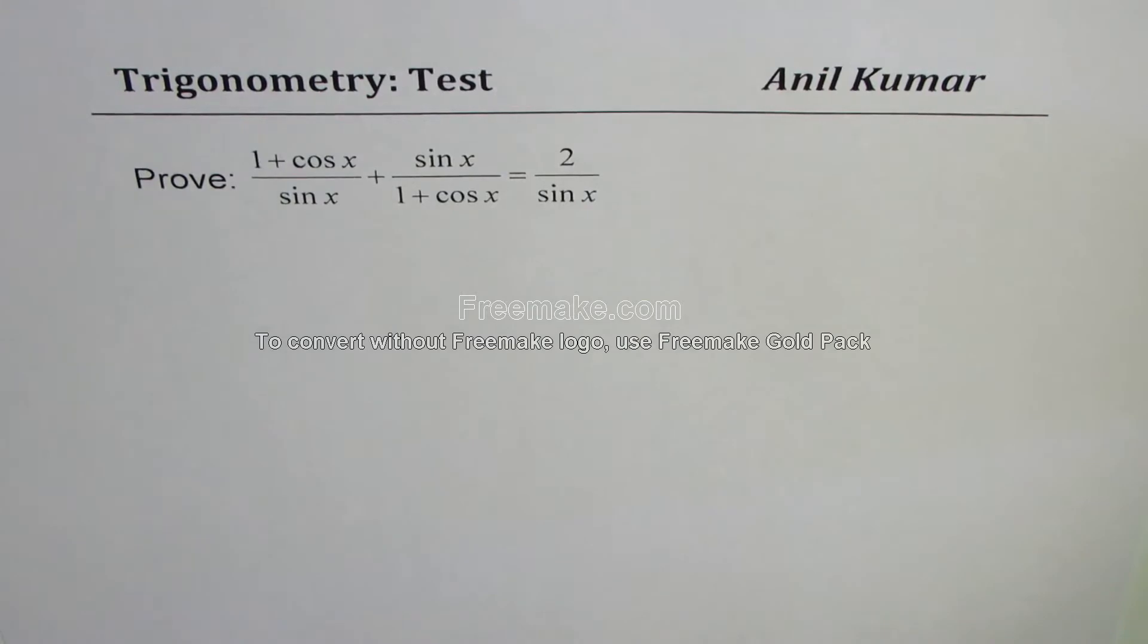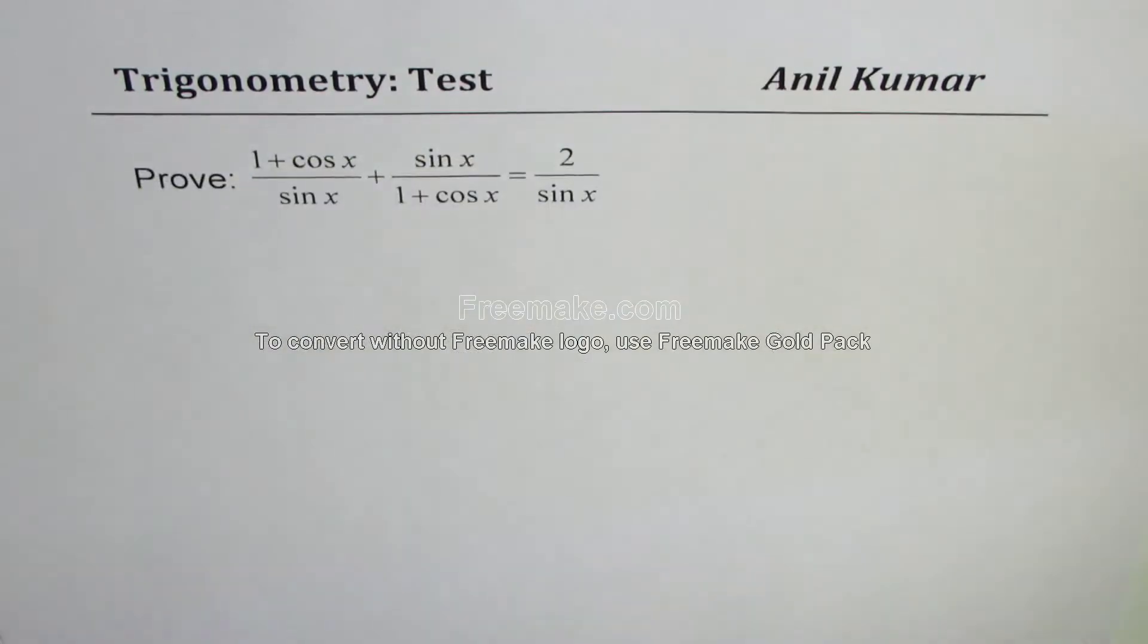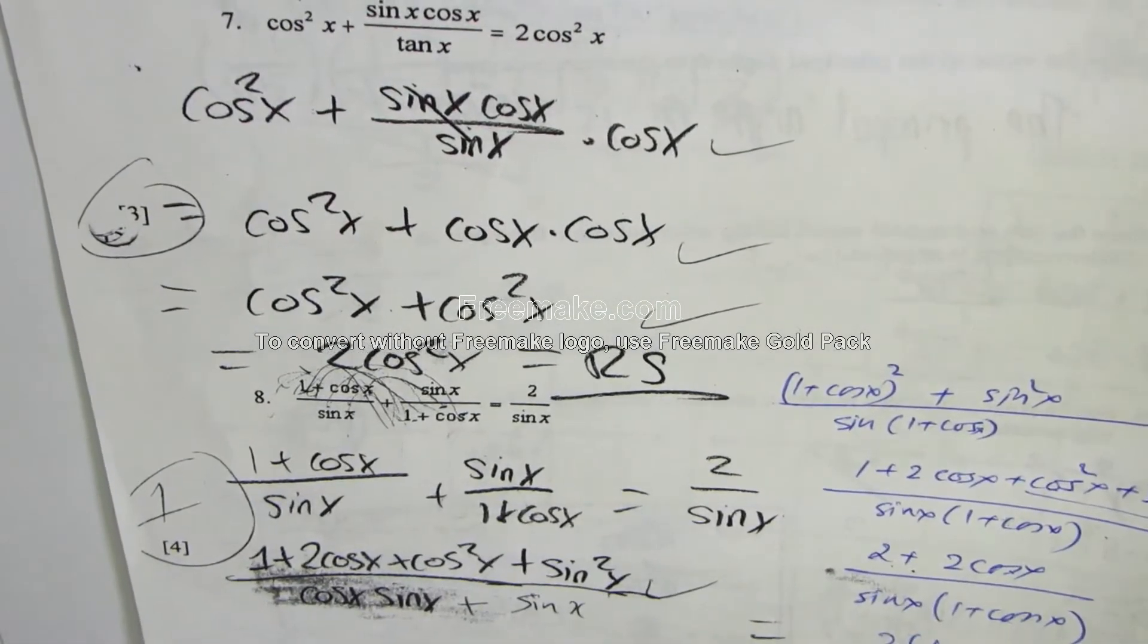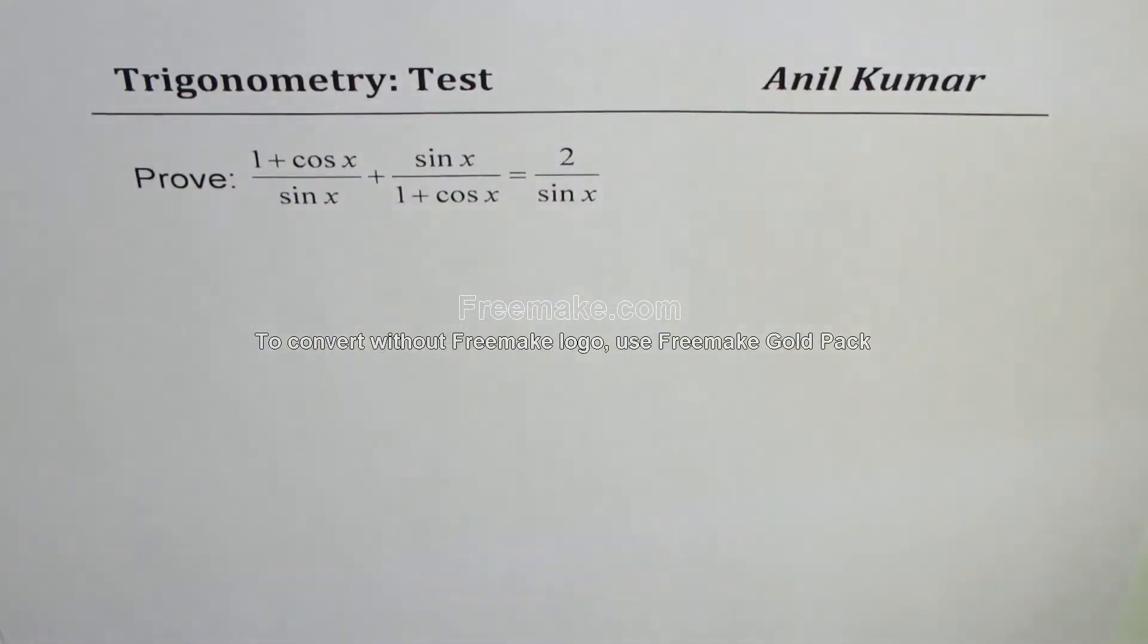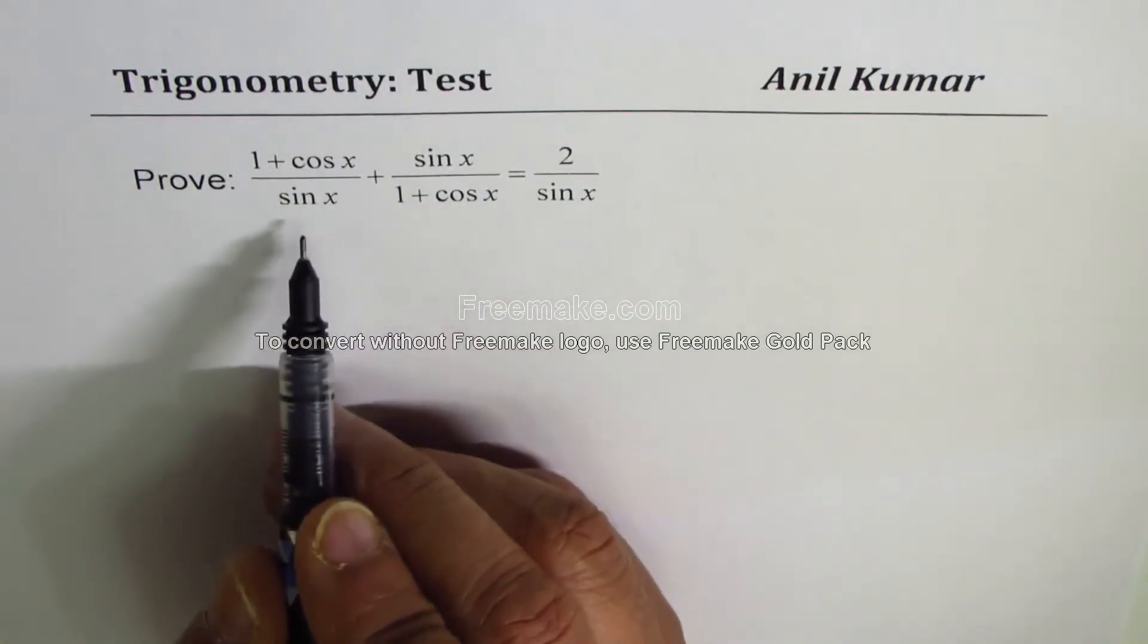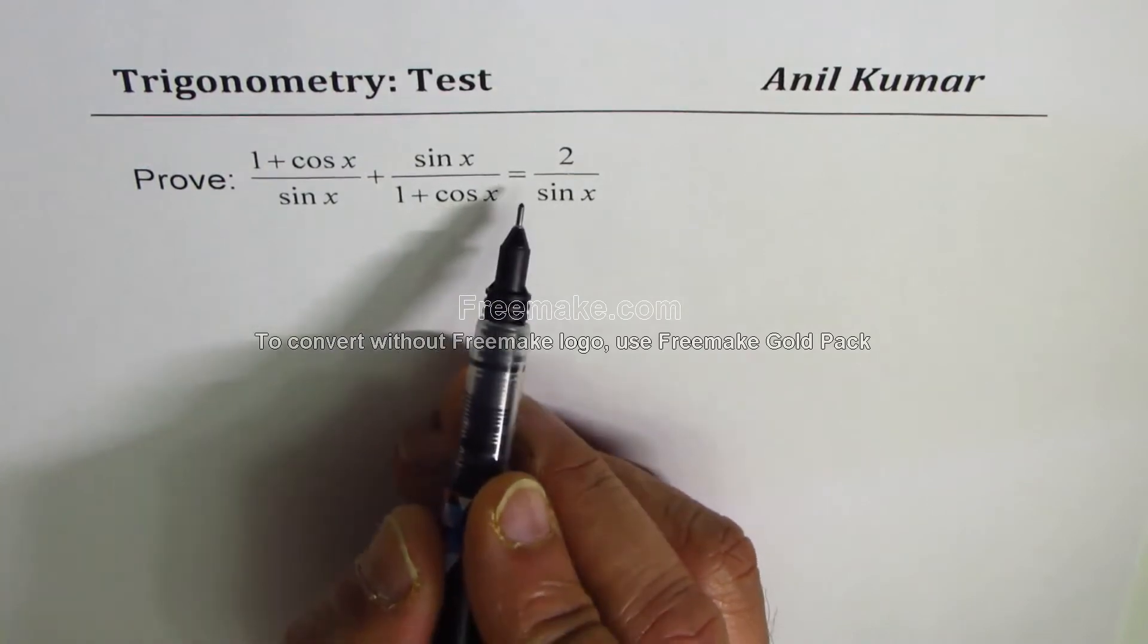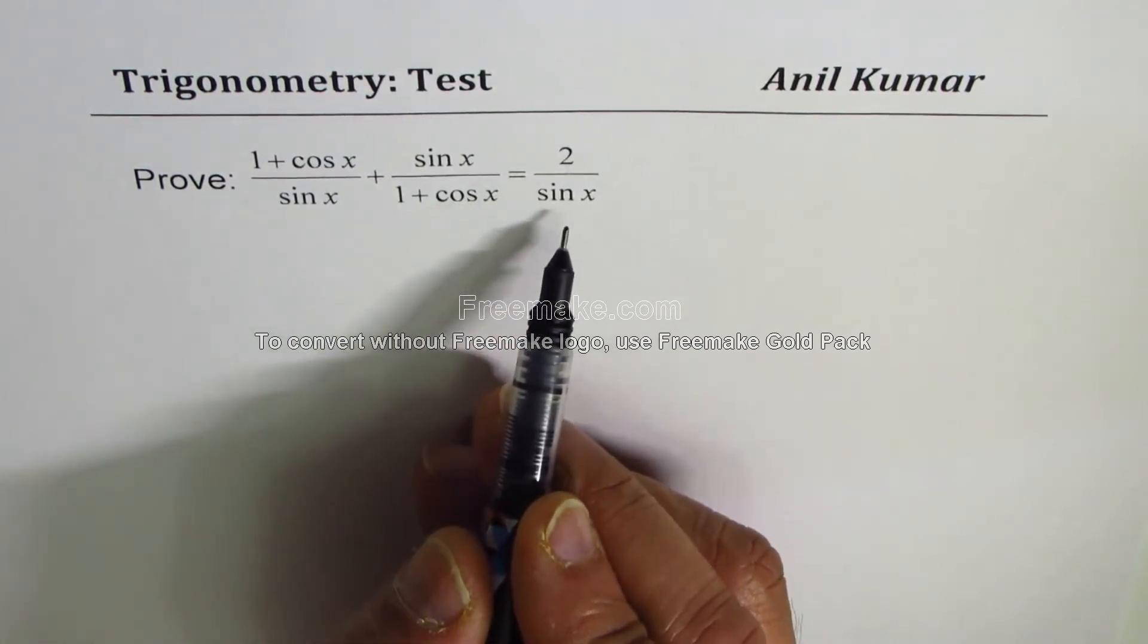I'm Anil Kumar sharing with you questions from previous test papers. We did this identity earlier and now we have taken up another identity from the test paper. Let's see how to prove the identity: (1 + cos x) / sin x + sin x / (1 + cos x) equals 2 / sin x.